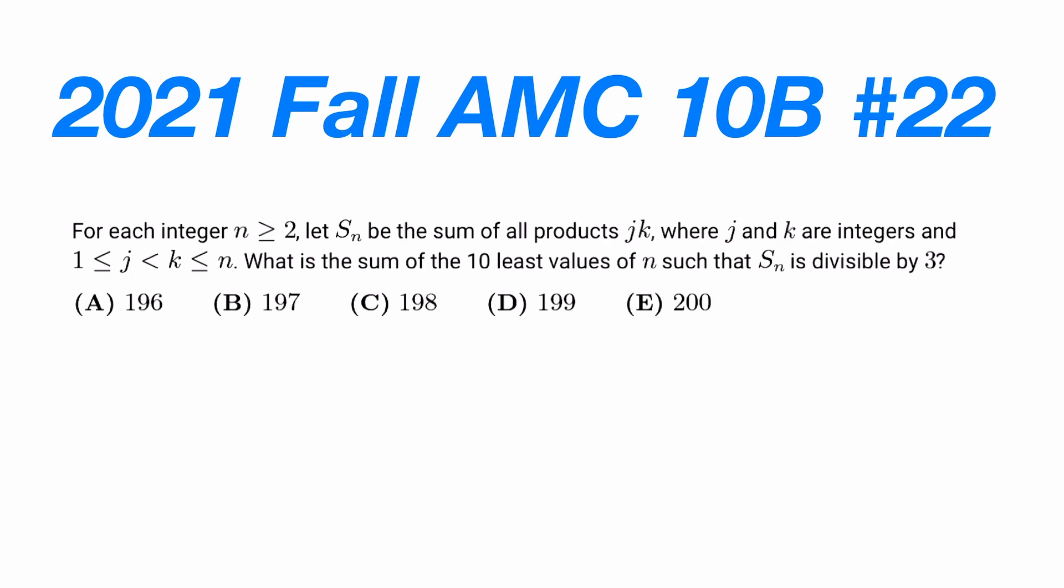This problem states: for each integer n greater or equal to 2, let S_n be the sum of all products jk where j and k are integers satisfying the given conditions. We have to add up all pairs of integers satisfying this to get S_n. What is the sum of the 10 least values of n such that S_n is divisible by 3?